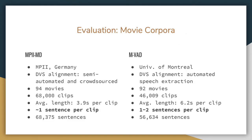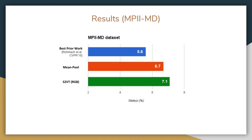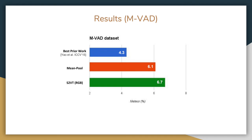The MP2MD and MVAD datasets are captions of various movies, used for testing purposes to see how well the system works for videos not used during training. For the MP2MD dataset, we get a METEOR score of 7.1% using RGB frames, which is a significant improvement from previous works. For the MVAD dataset, the METEOR score is 6.7%, which is also a very good improvement over past scores achieved by different systems.